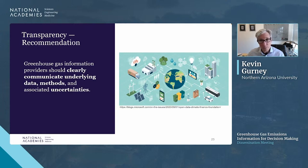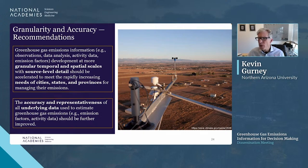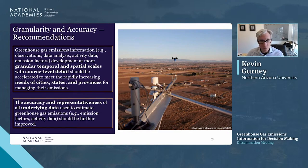GHG information providers should clearly communicate underlying data, methods, and associated uncertainty — this is fundamental to building better greenhouse gas information. Increasingly fine spatial scales and finer functional information — including fuel type, sector, and technology — are becoming important to decision makers, who need not just magnitudes but attributes relevant to specific policies. The accuracy and representativeness of all underlying data used to estimate emissions should be further improved.